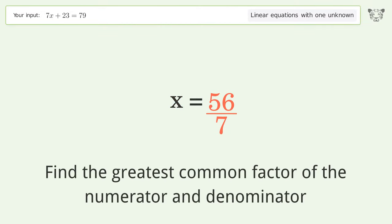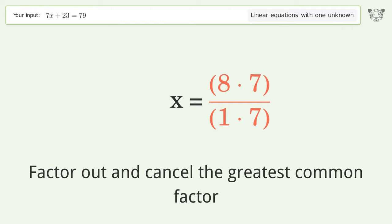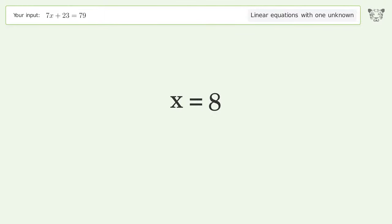Find the greatest common factor of the numerator and denominator. Factor out and cancel the greatest common factor. And so the final result is x equals 8.